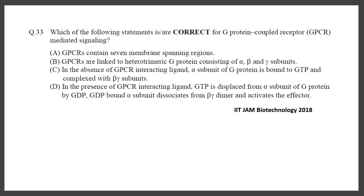In IIT JAM 2018 they asked which of the following statements is correct for G protein-coupled receptor signaling. The descriptions include: GPCRs contain seven transmembrane regions — correct; GPCRs are linked with heterotrimeric G protein containing alpha, beta, and gamma subunits — correct; in the absence of a GPCR-interacting ligand, the alpha subunit is bound to GTP and is in complex with beta-gamma subunit — this is incorrect.